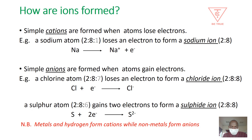Consider a sulfur atom whose electron configuration is 2, 8, 6. For it to be stable, it gains two electrons, and what it forms is called a sulfide ion whose electron configuration is now 2, 8, 8. The charge on the atom is now negative two, as shown in that equation at the bottom.